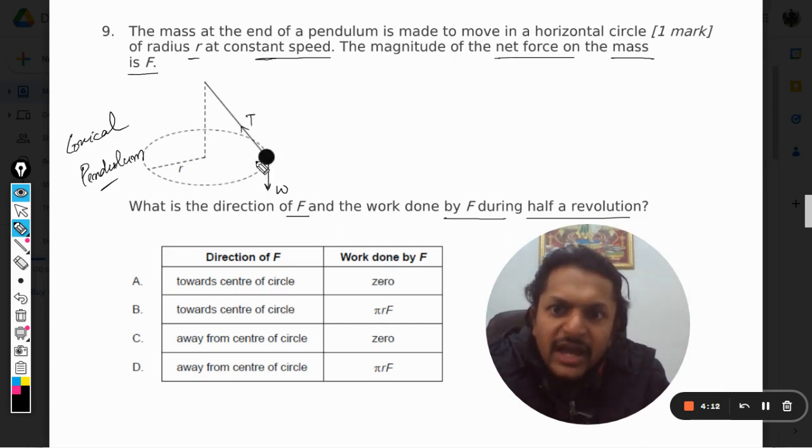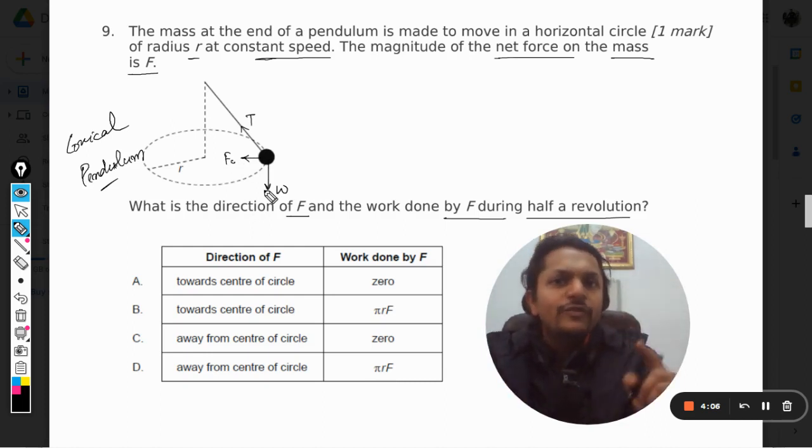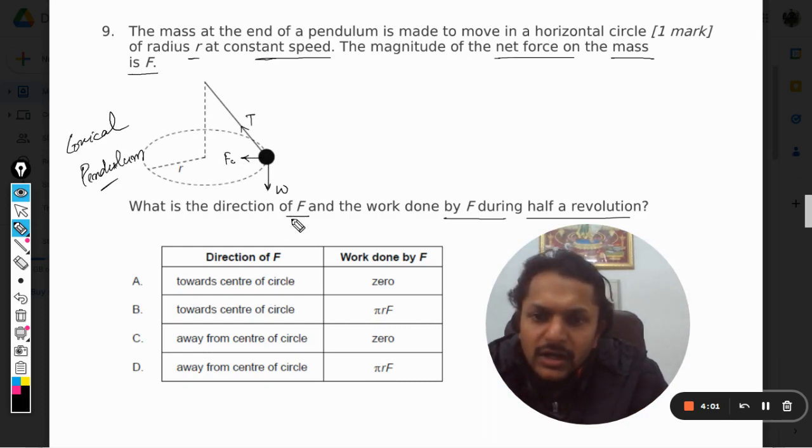It is given that it is moving at a constant speed, so F is the resultant force. This F is the centripetal force. What is the direction of F? The direction of F is towards the center of the circle.